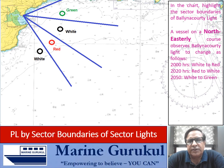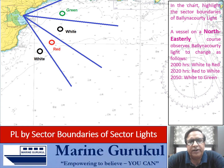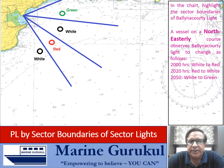Now, if there is a vessel on a northeasterly course and she observes Belina Koti light to change as follows: at 2000 hours it changes from white to red, at 2020 it changes from red to white, and at 2050 it changes from white to green.